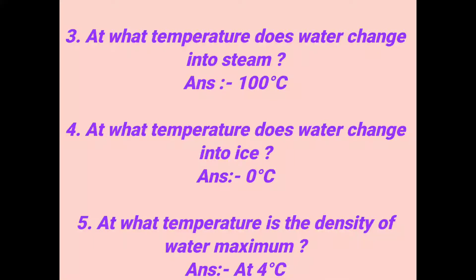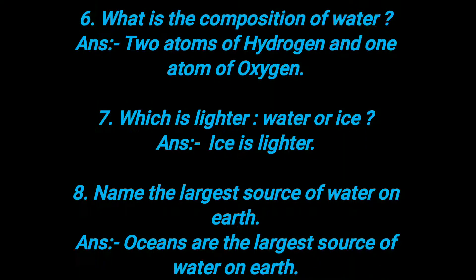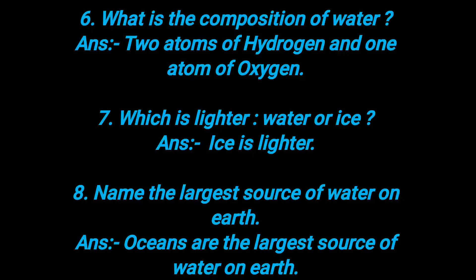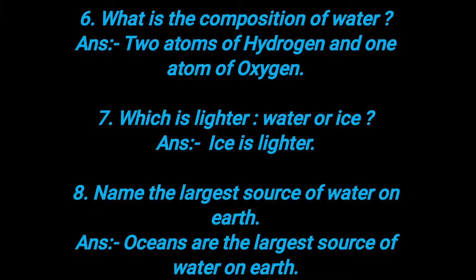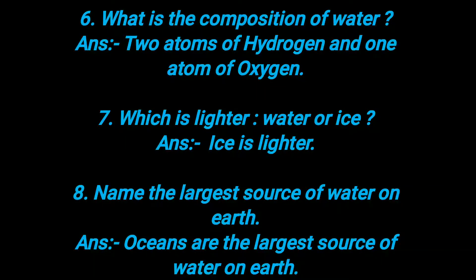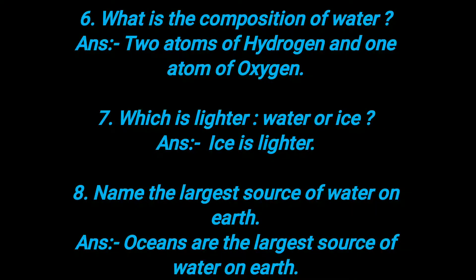Fifth: at what temperature is the density of water maximum? The density of water is 1 gram per cubic centimeter, and it is maximum at 4 degrees Celsius. Sixth: what is the composition of water? There are two atoms of hydrogen and one atom of oxygen — that is the composition of water.